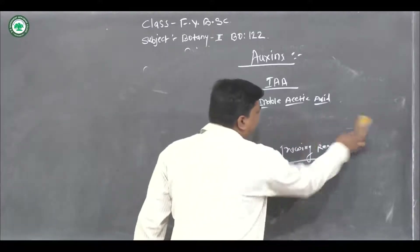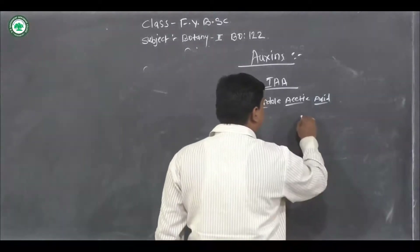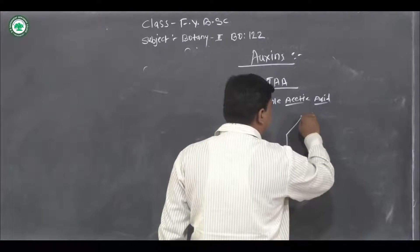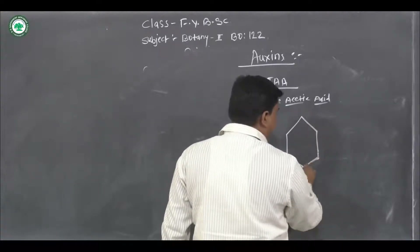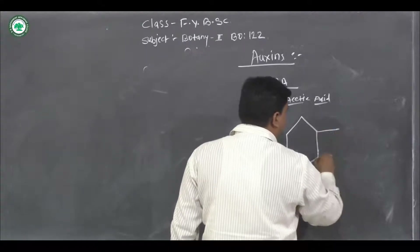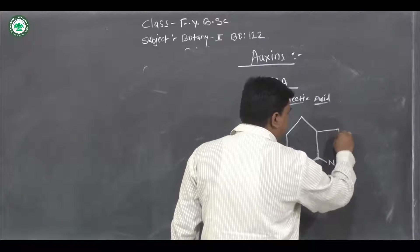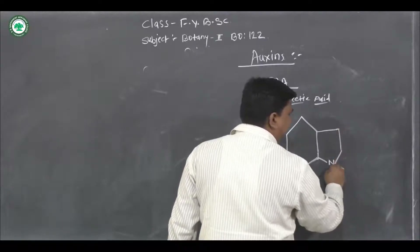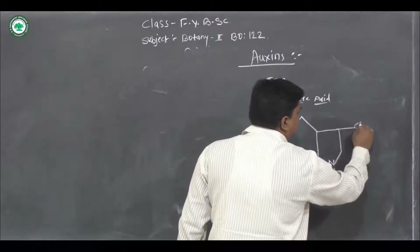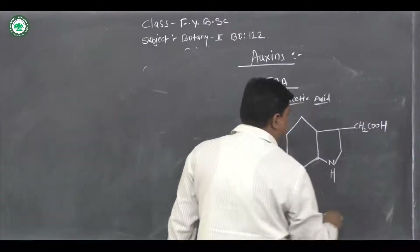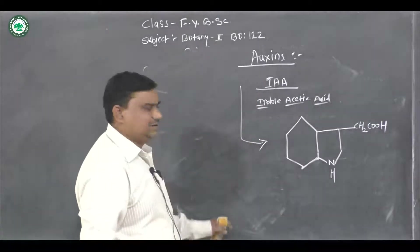Looking at the chemical structure of indoleacetic acid (IAA), its structure contains a CH₂COOH group. This is the structure of indoleacetic acid.